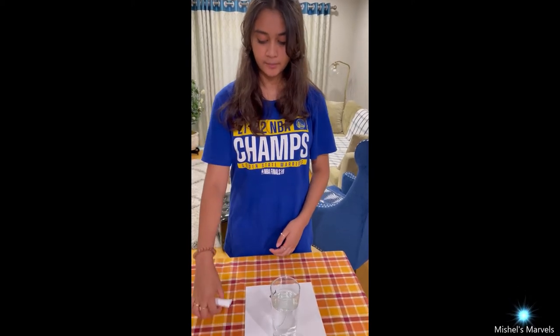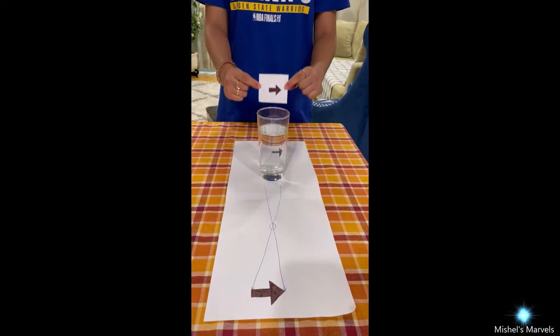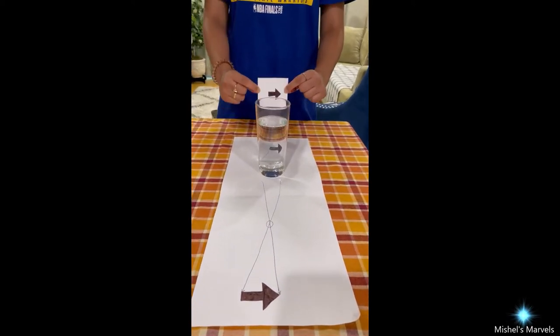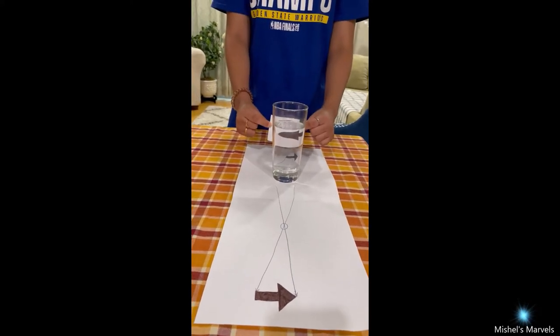And I'm sure you've all heard of the optical illusion where the arrow reverses itself after it goes through water because of refraction. But that doesn't exactly explain why the arrow reverses.